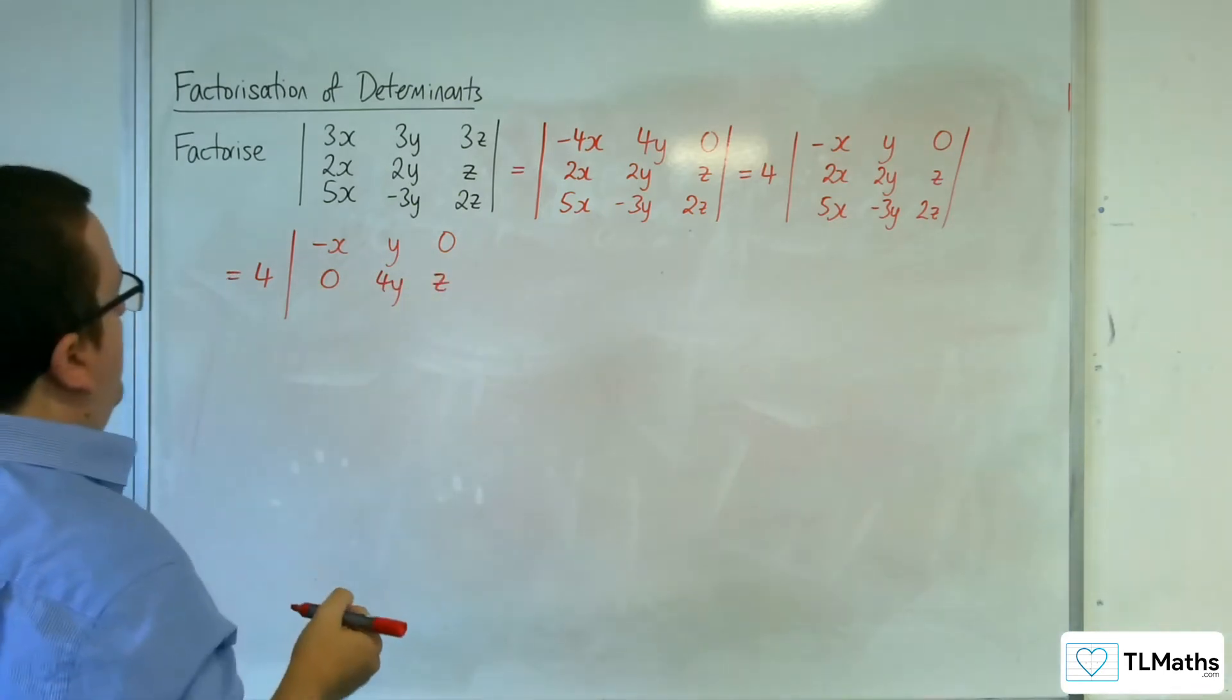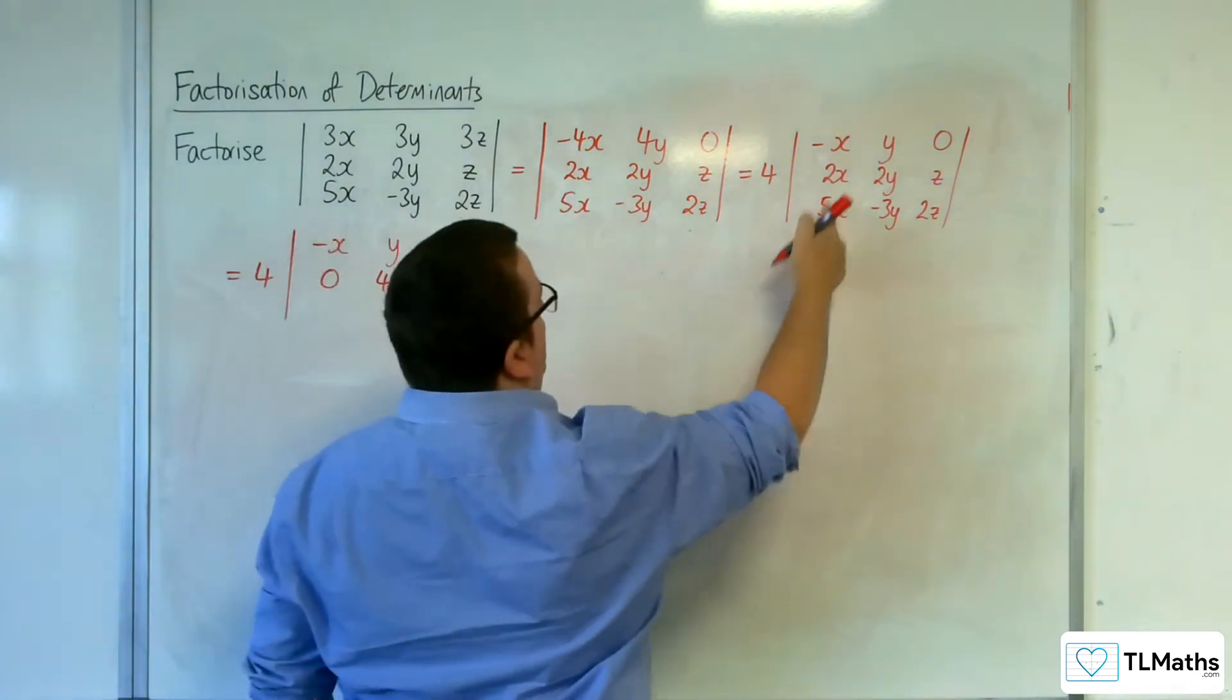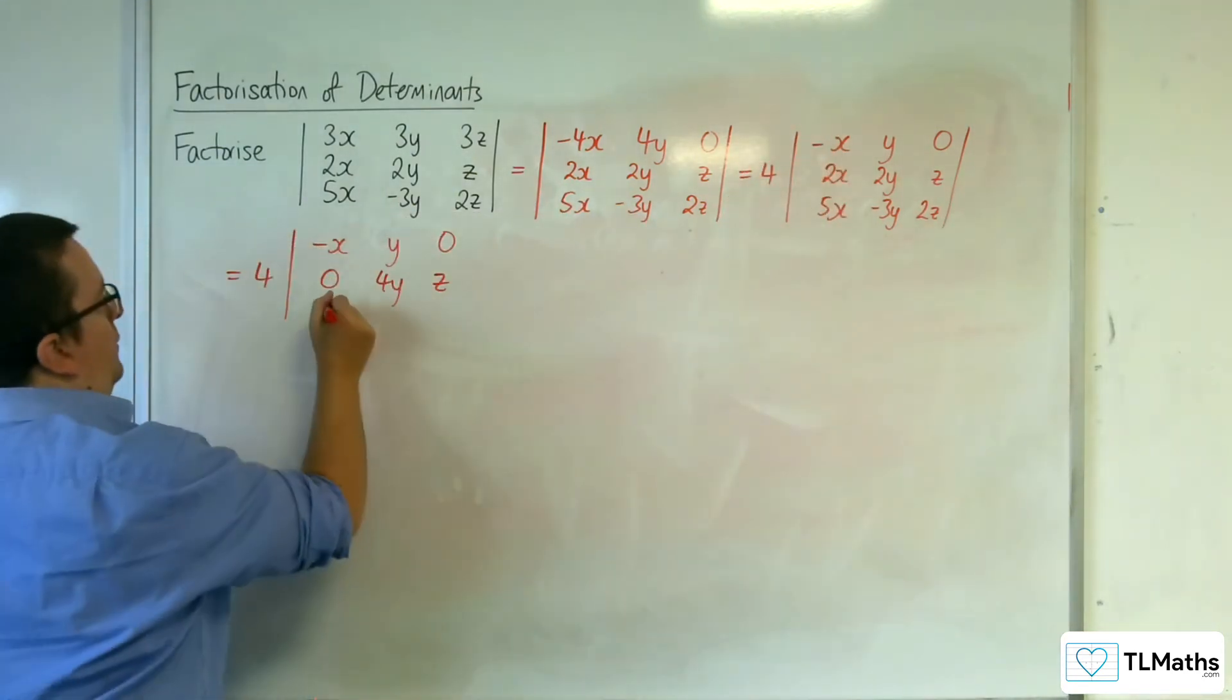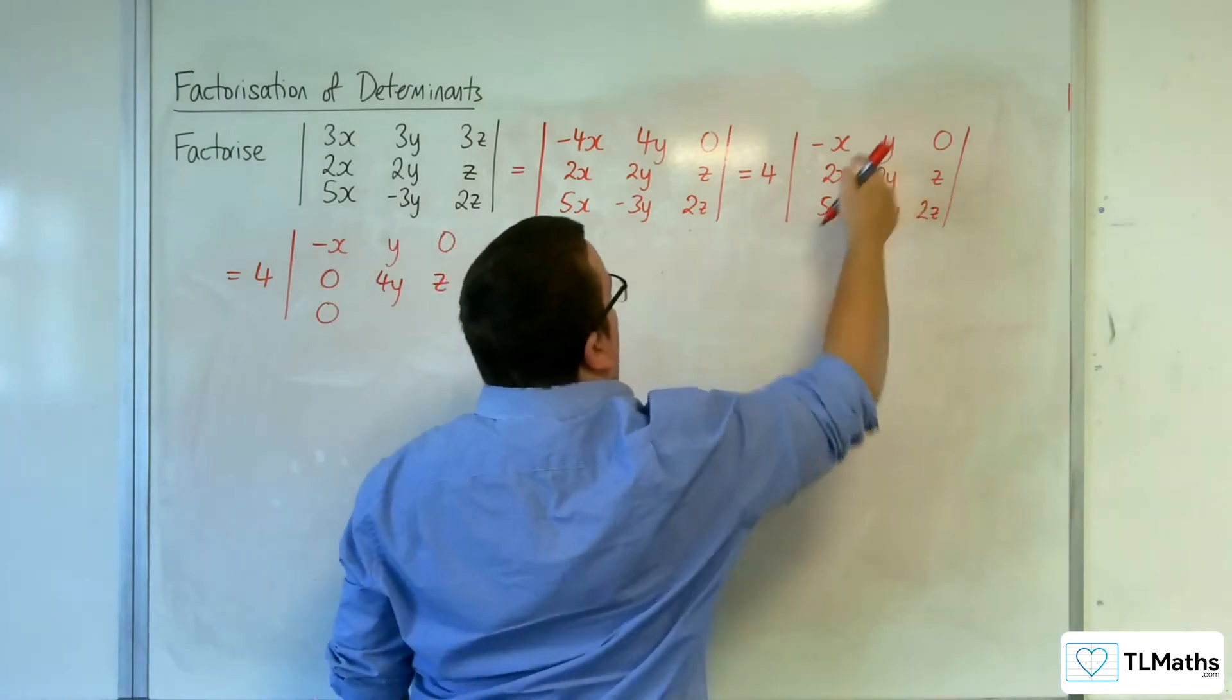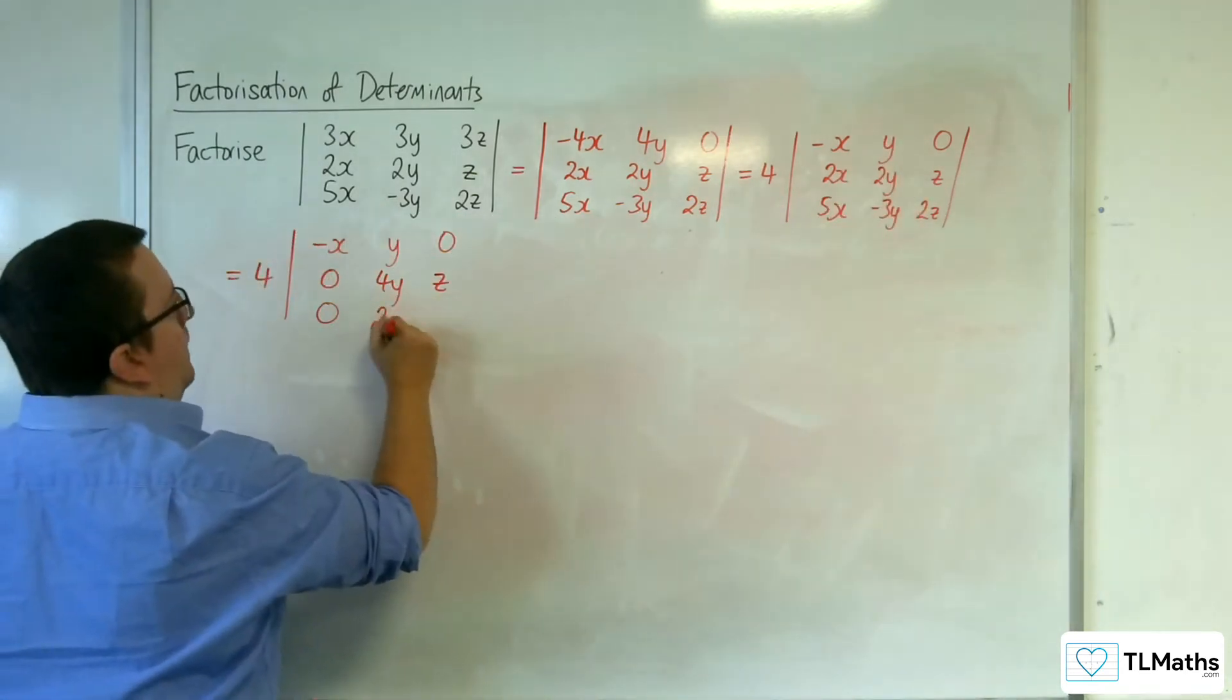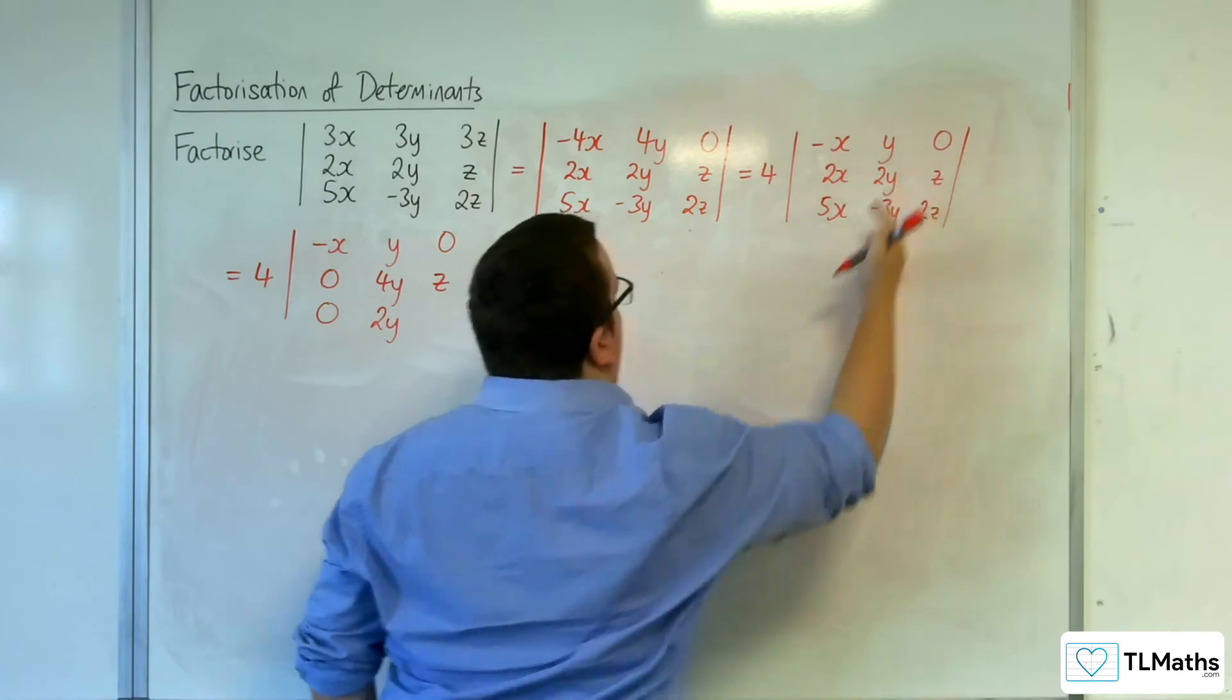Okay, then I've got the 5x plus 5 lots of minus x is 0, then I've got the minus 3y plus 5 lots of y is just 2y, and 2z plus 5 lots of 0 is just 2z.